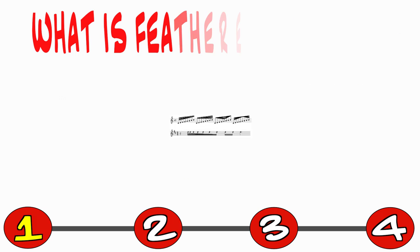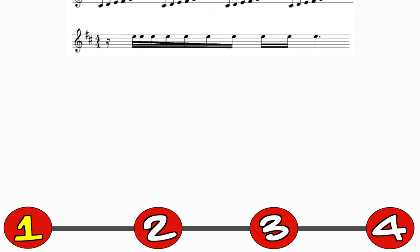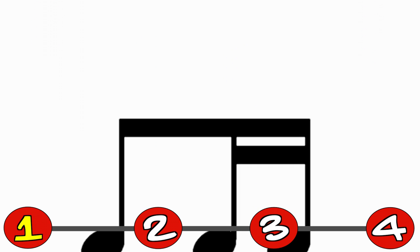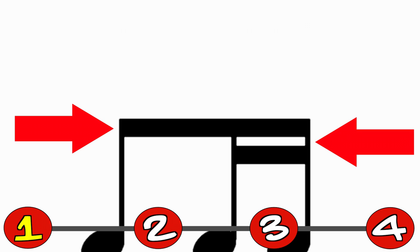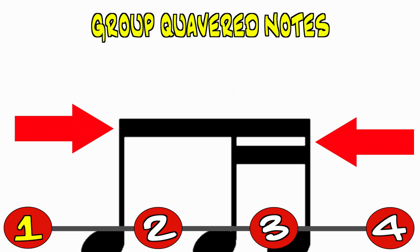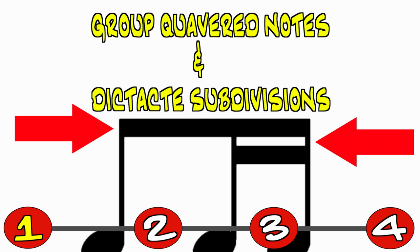So what exactly is this feathered beaming technique? As you probably know, the beam is a very large bar, or set of bars, that not only group quavered notes together by beat, but also dictate the subdivision of each note in the set.